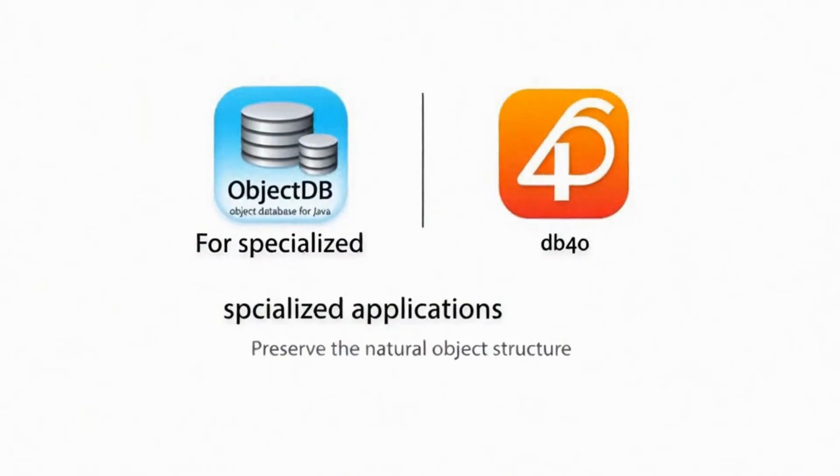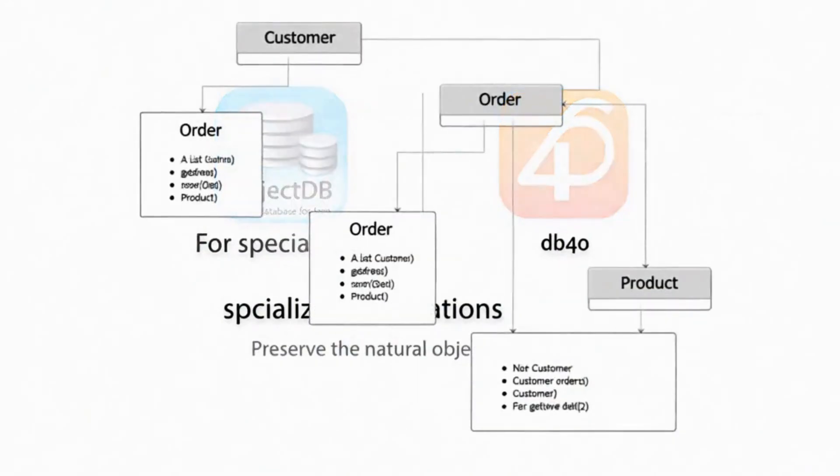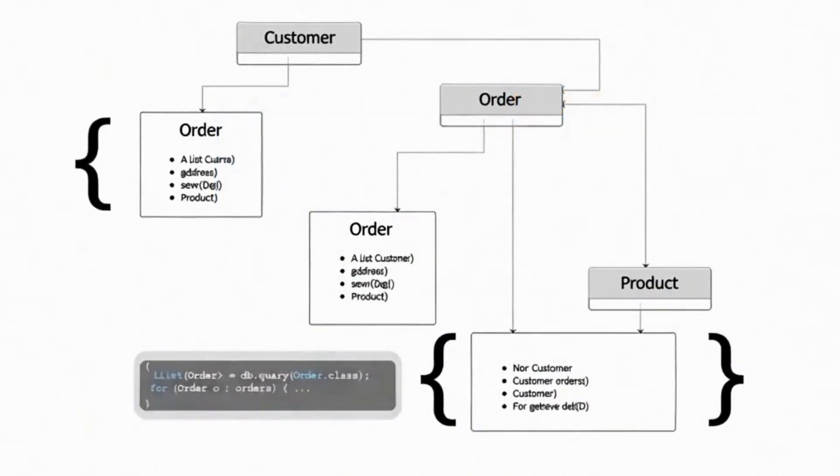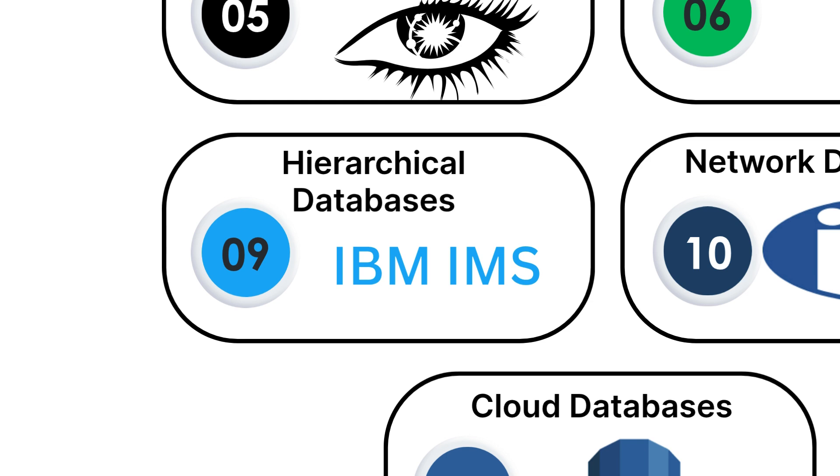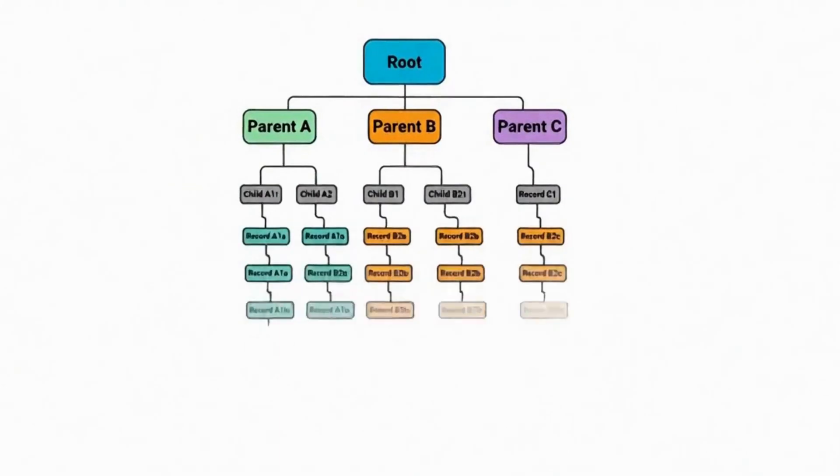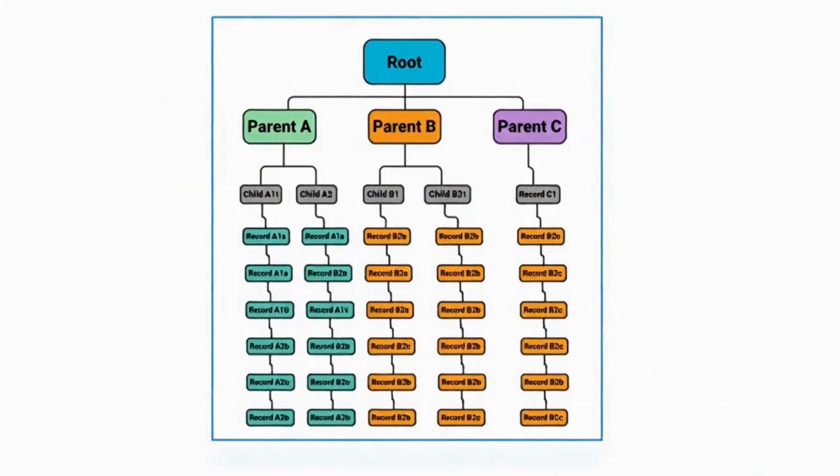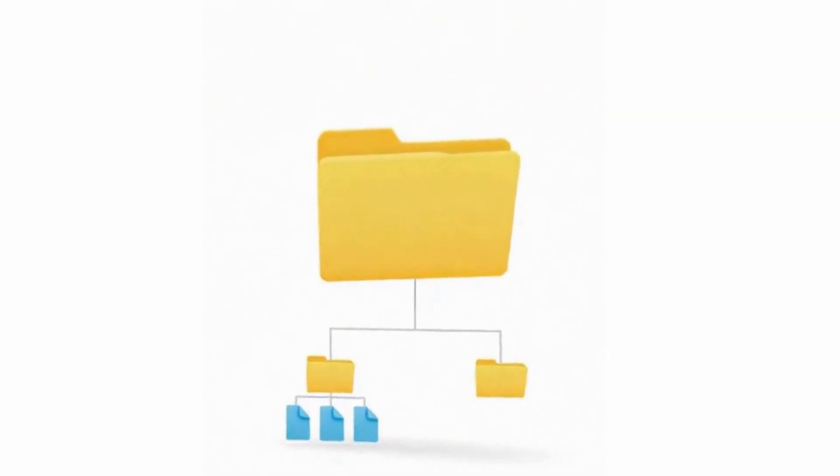These databases are great for applications that deal with complex data structures like computer-aided design software, multimedia applications, or scientific research where data has complex relationships and behaviors. ObjectDB and DB40 are examples used in specialized applications where the natural object structure needs to be preserved.